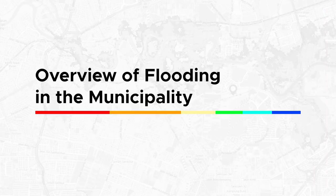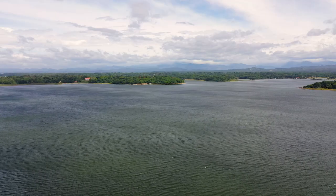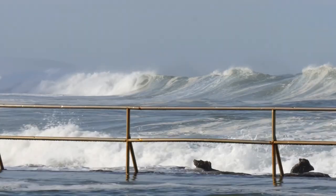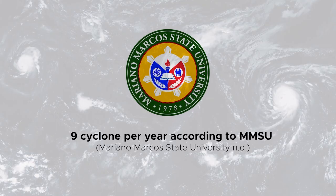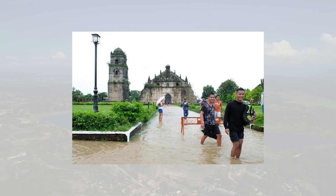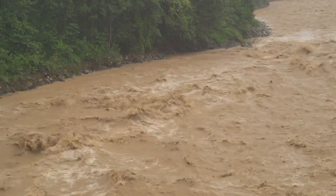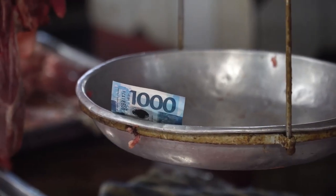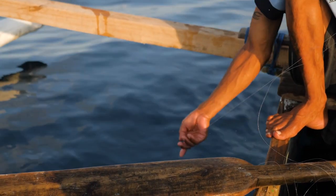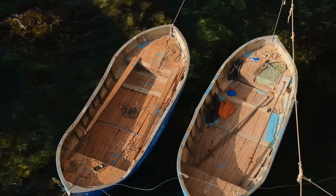Overview of flooding in the municipality: The prosperity of Paua'i faces challenges due to the municipality's vulnerability to flooding during typhoons and monsoons. The municipality is visited by an average of nine cyclones per year, according to MMSU. Situated on flat land near the coast, the town lacks natural drainage and protection from storm surges. Rivers often overflow, causing damage. Typhoon-induced flooding takes a major toll on the local economy — farmers lose income when crops are destroyed, and fishermen are unable to go out during flash floods and storms.